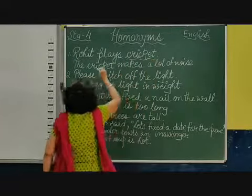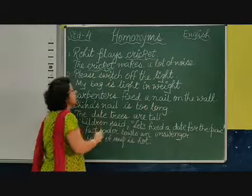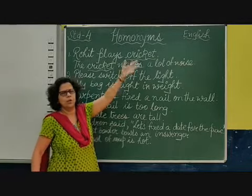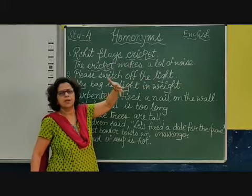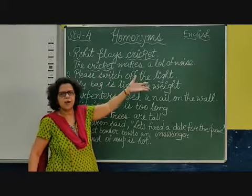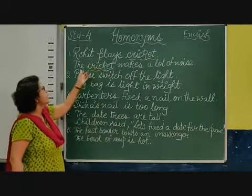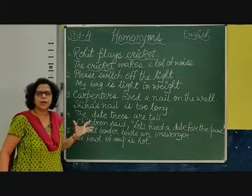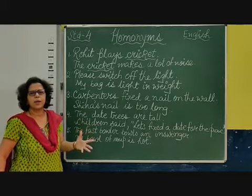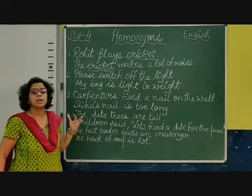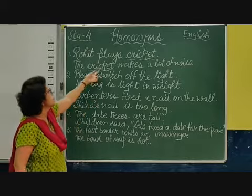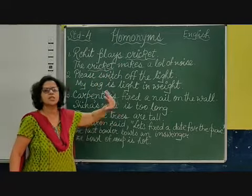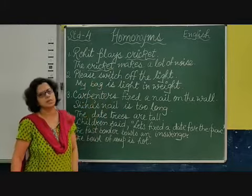So: 'Rohit plays cricket and the cricket makes a lot of noise.' Here cricket means a game — you all know that cricket is a game. And here 'the cricket makes a lot of noise' — it is not that cricket, the game cricket. Game cricket cannot make any noise. It is the insect cricket. So as you can see, the two words have the same spelling and the same pronunciation but different meanings.